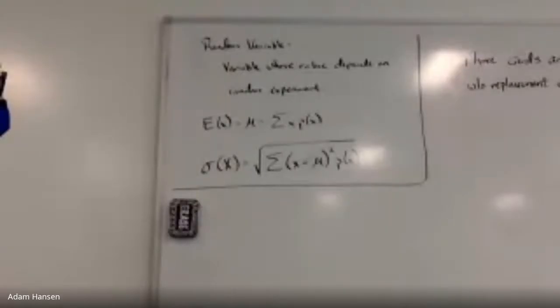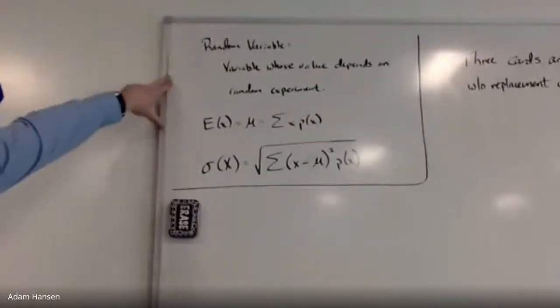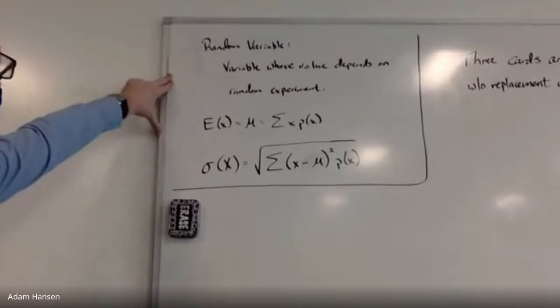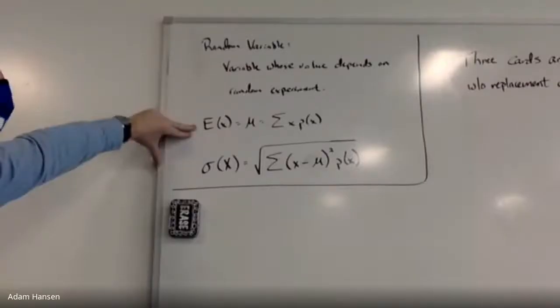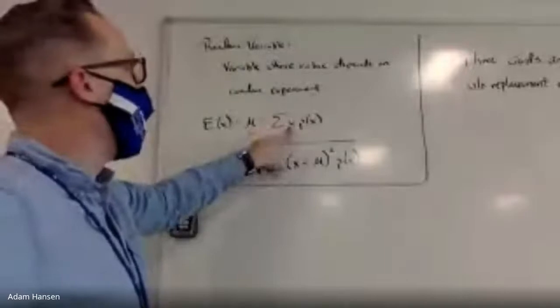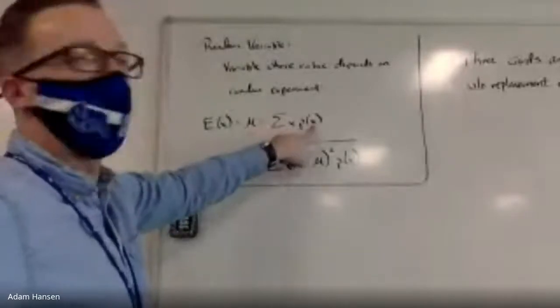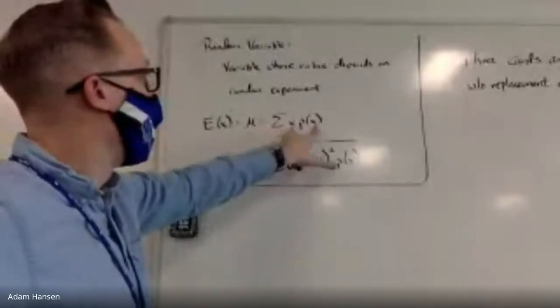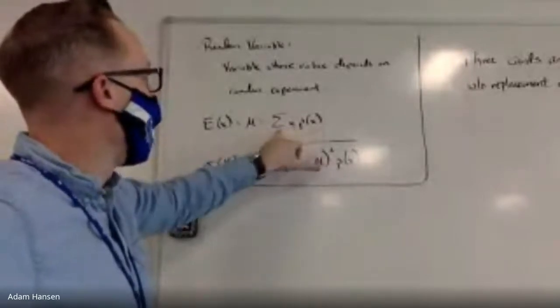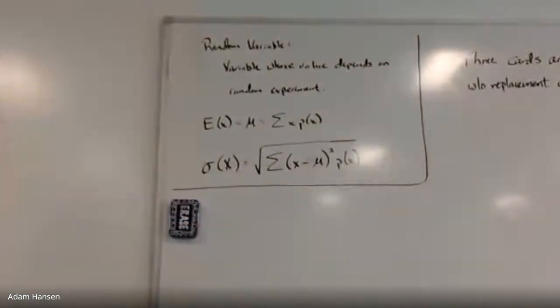A random variable is a variable whose value depends on the outcome of a random experiment. The expected value is the summation of each outcome, lowercase x, times its respective probability P(x). We find those products and add them up — that's the expected value for our random variable.